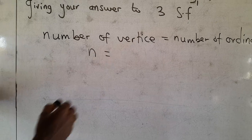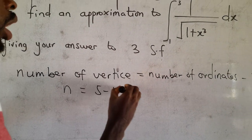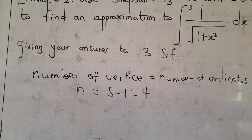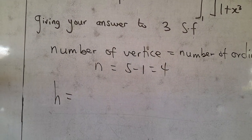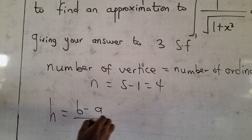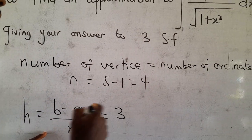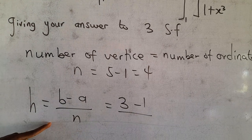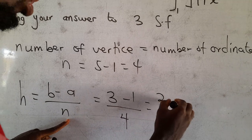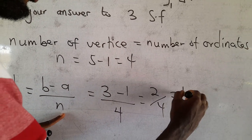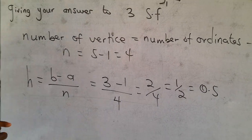The number of subintervals N equals the number of ordinates (5) minus 1, giving us 4. Since 4 is even, we can use Simpson's 1/3 rule. We find the interval difference h = (B − A) / N. Here B is 3, A is 1, and N is 4. So 3 minus 1 is 2 over 4, giving h = 0.5.